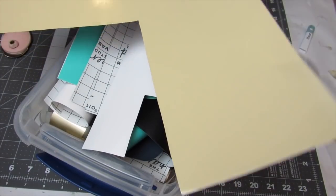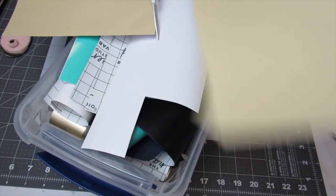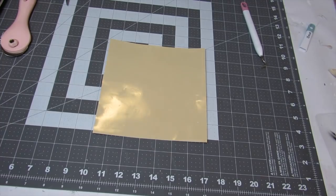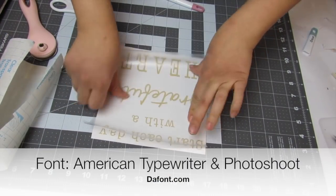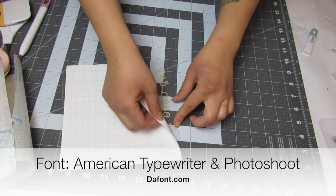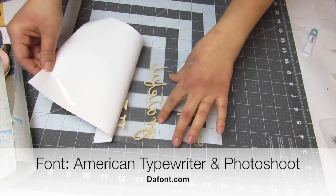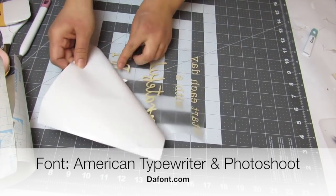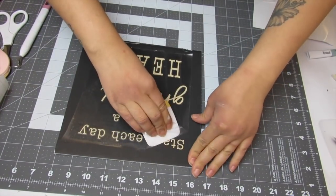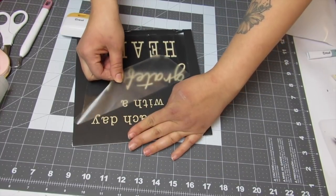Now I will have a free printable and an SVG of this image down in the description box below. I decided to use my Cricut. I used some scrap vinyl in this bin that I have with all scrap pieces of vinyl. This is vinyl from Arteza I've just had it in my stash. I went ahead and put the fonts that I used on the screen. I can also put them down below in the description box. I used American Typewriter and Photoshoot from Dafont.com.